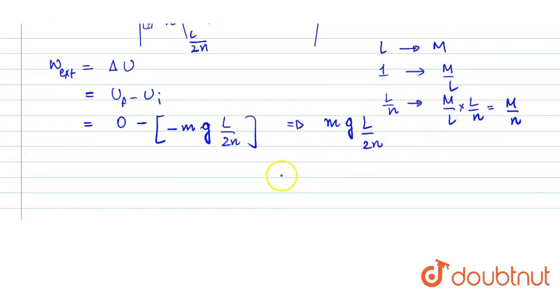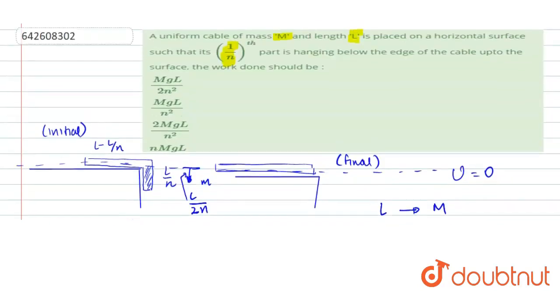Right, so let's put this value here. That is capital M by n into g into L by 2n, so that will give us MgL by 2n squared. Right, so this will be the work done.